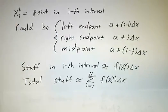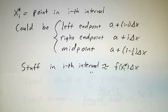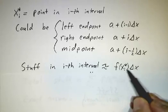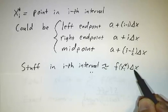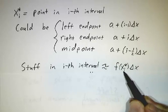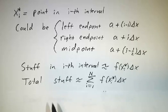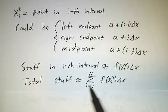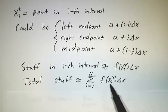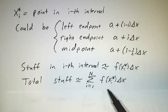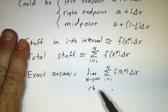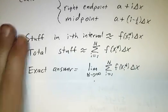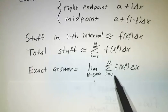And then we say, how much stuff is there in the ith interval? Well, f tells you the stuff per unit length. Delta x is the length. So the total amount of stuff in the ith interval is roughly f of xi star times delta x. The total amount of stuff period is the sum. And this isn't exact because the amount, you know, f is not a constant over each little interval. It varies a little bit. And we can get around that by slicing things finer and finer and finer and finer.